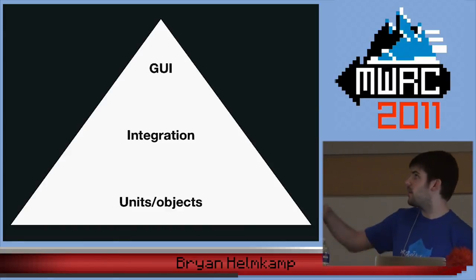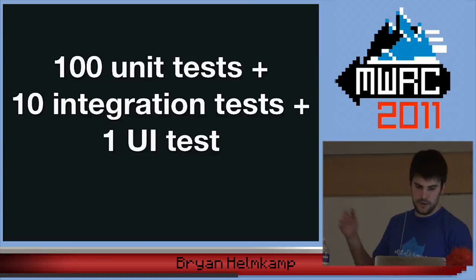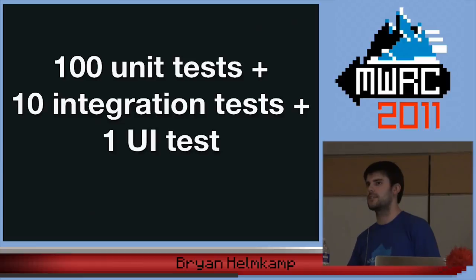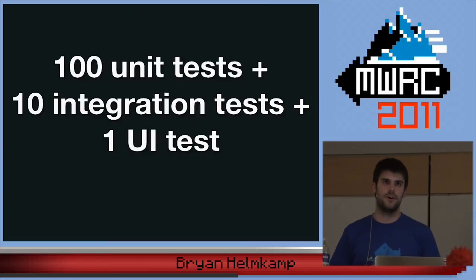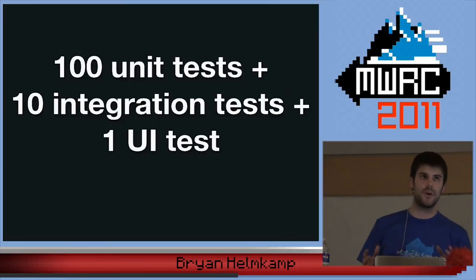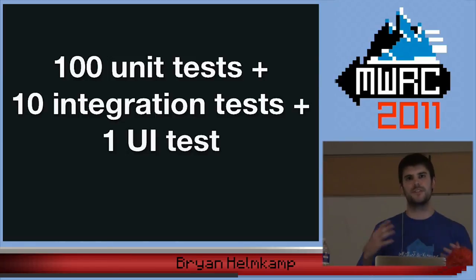Think about having maybe 100 unit tests for every 10 integration tests and for every single UI test. Those 111 tests will run much faster than 100 UI tests alone, and you can try to get the same level of confidence by layering strategies more strategically. I would caution everyone against inverting the testing pyramid — whether you're a monolithic app or a service-oriented architecture. If you're writing tons of Cucumber tests and not writing unit tests because it doesn't seem natural, you are headed for pain.